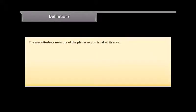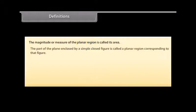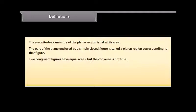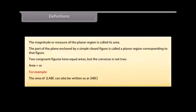Definitions. The magnitude or measure of the planar region is called its area. The part of the plane enclosed by a simple closed figure is called a planar region corresponding to that figure. Two congruent figures have equal areas, but the converse is not true. The area of a figure can also be denoted by AR. For example, area of triangle ABC can also be written as AR(ABC).